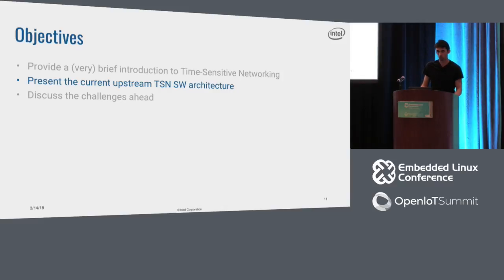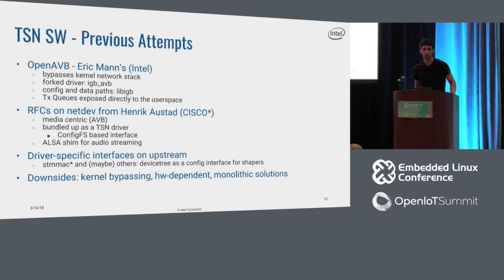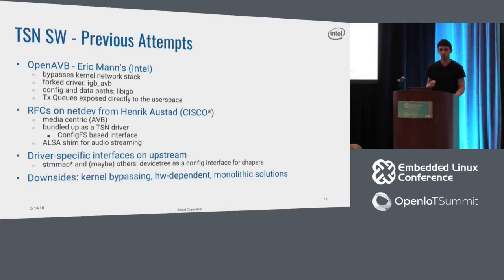After this introduction, I'll talk about the work we've been doing on the Linux kernel. We first looked at previous attempts. A network engineer from Intel, Eric Mann, about six years ago at Linux Plumbers made a very good presentation about TSN and wrote a demo called OpenAVB. He forked the IGB driver for the Intel I210 controller, and rather than spending time creating kernel interfaces for configuring the shaper, he bypassed the entire kernel and exposed all the transmission queues and registers to user space through a library. That demo became a very big project — today it's called OpenAvnu — and it's used in quite a few products.